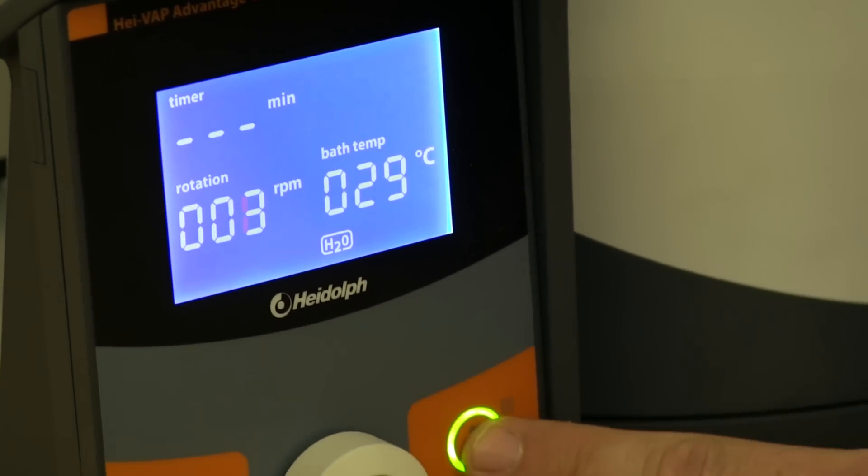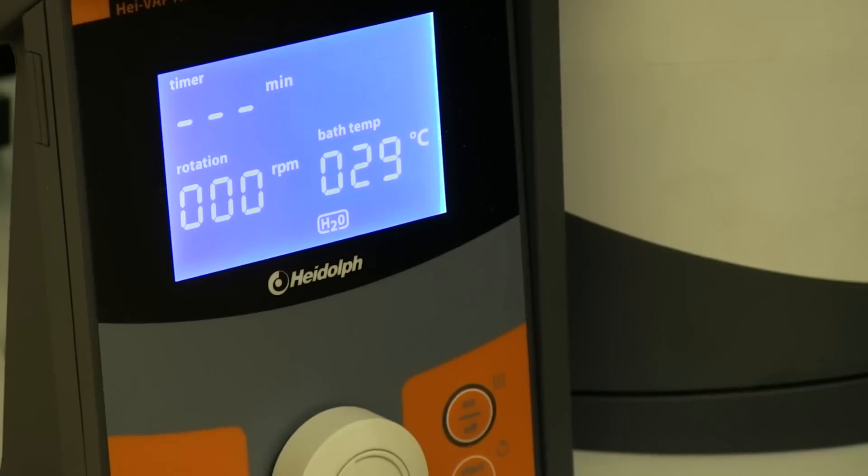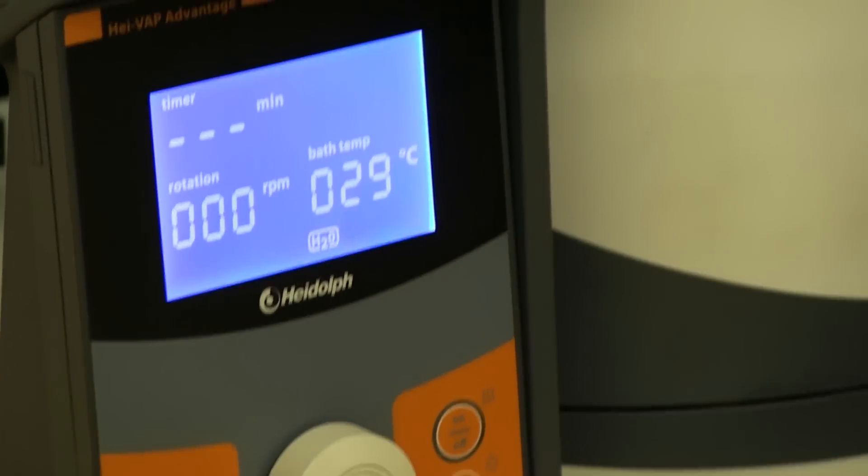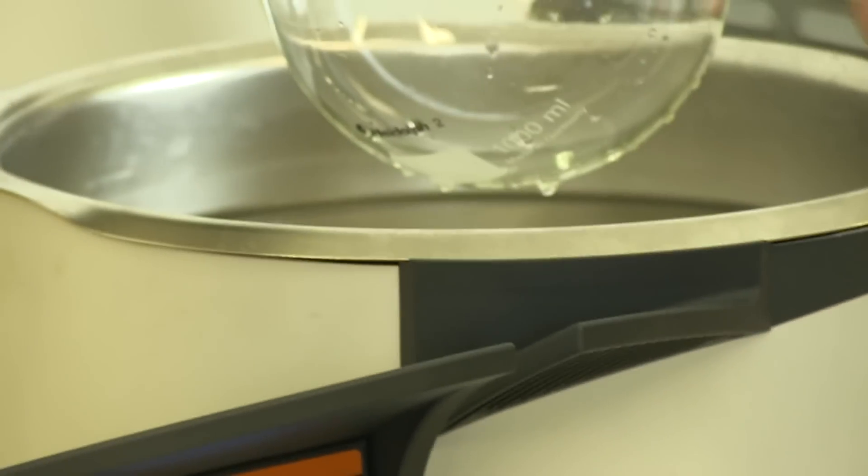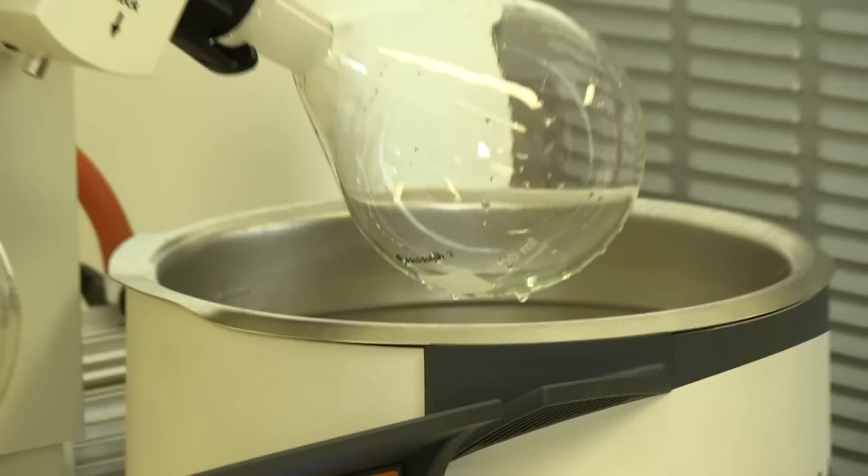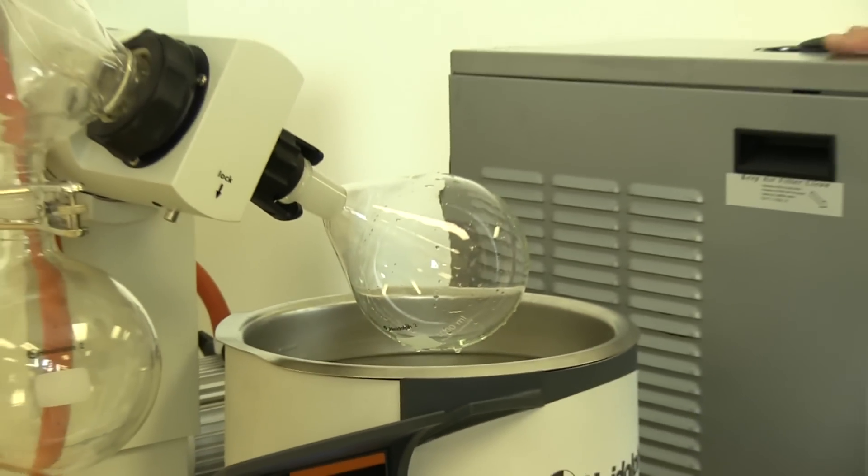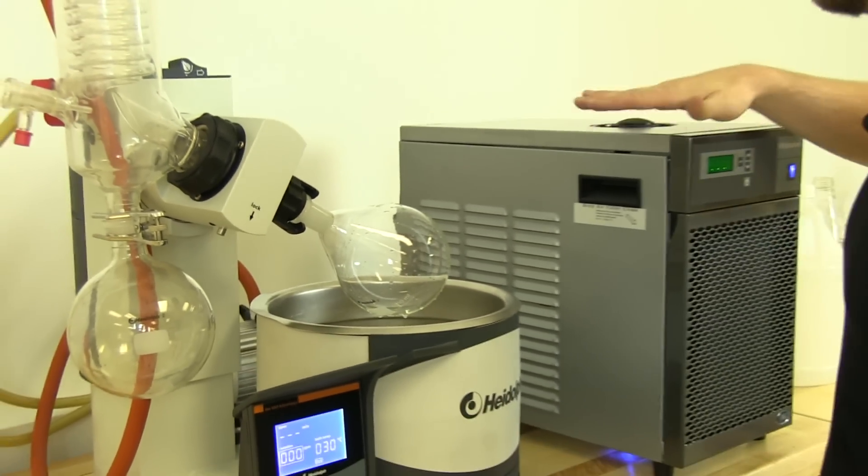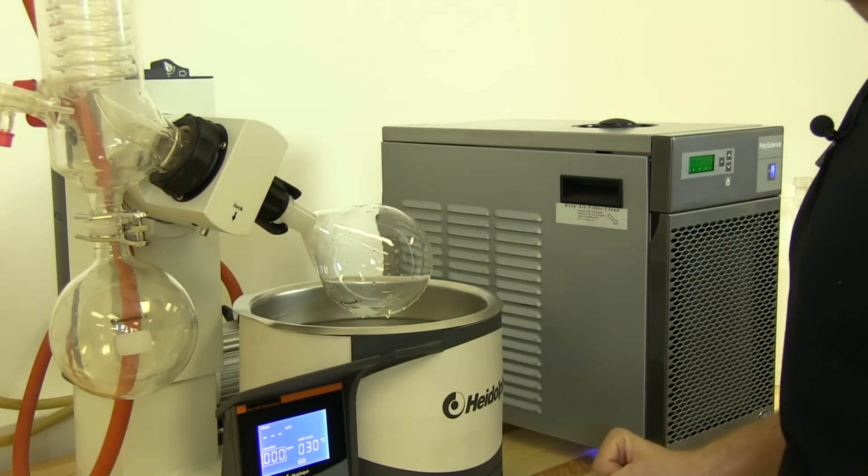Stop the rotation. Turn off the heat for now. You can raise it up and then we're going to show you how to fill and make sure that we have the proper chilling going on with the evaporator here.